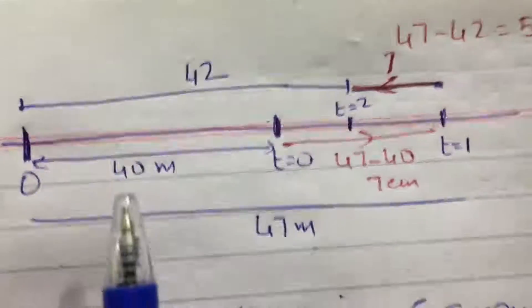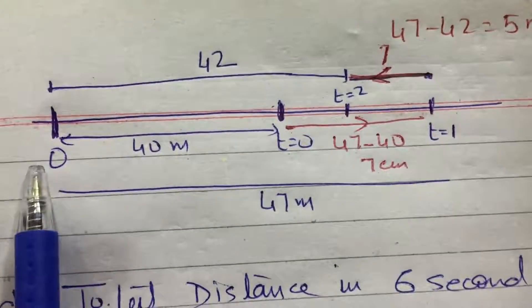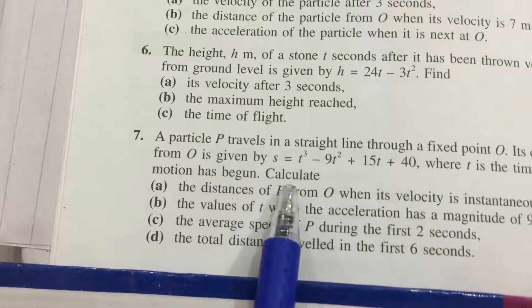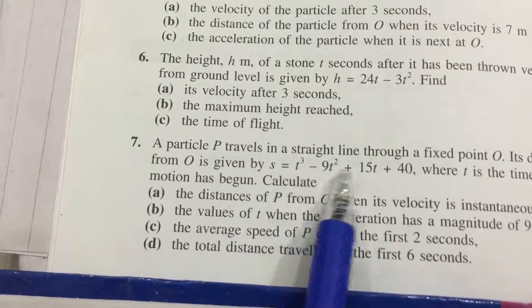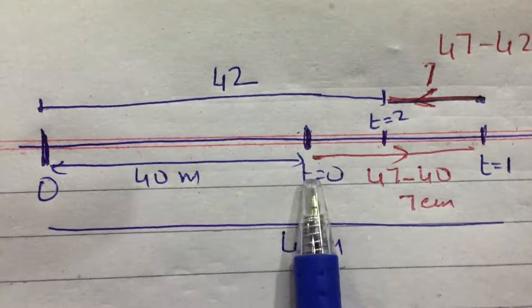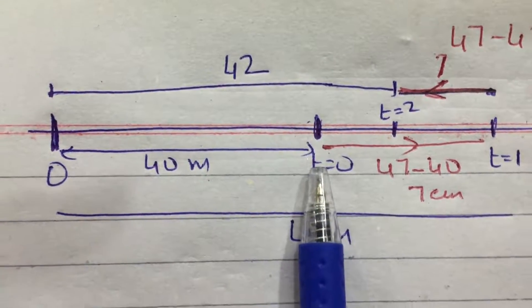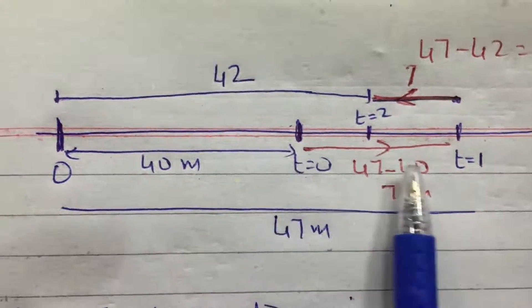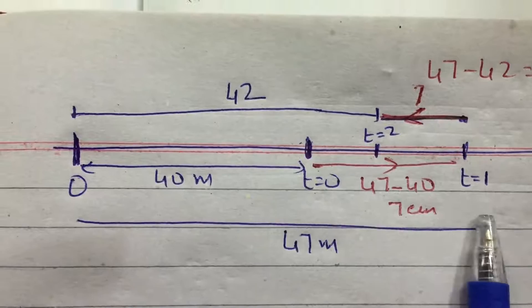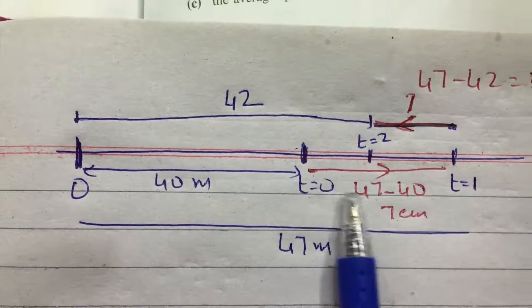Now let's see the whole process on a number line to understand how the motion is happening. At t equals 0, substituting into the displacement equation gives 40 meters, meaning initially the object was 40 meters from the origin. At t equals 1, the distance from the origin is 47 meters.